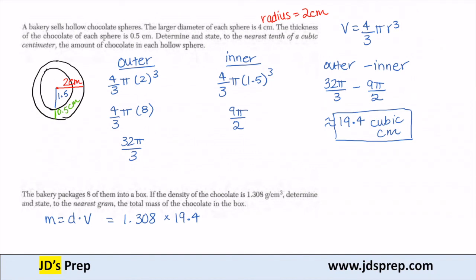So this is going to give us the mass of 1 sphere. What we want to know is the total mass of the chocolate in the box. So because there's 8 in each box, we're going to have to multiply that by 8 to give us the total, which is approximately 203 grams in each box.